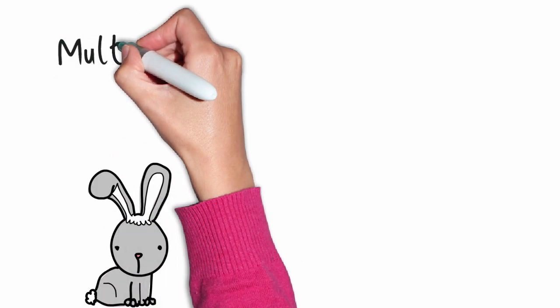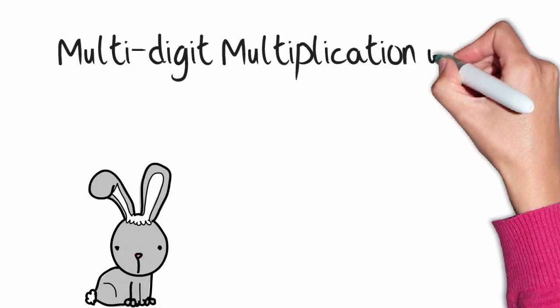There are many algorithms for multiplying. Today we're going to look at one using distributive property.